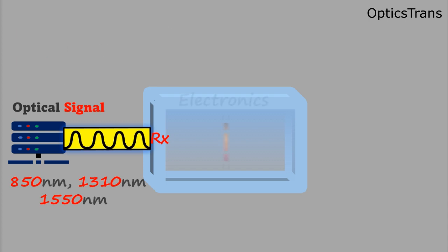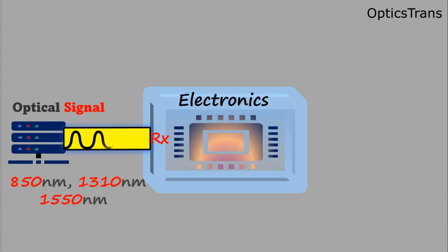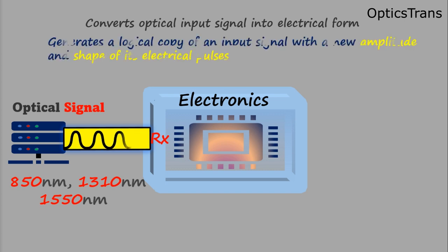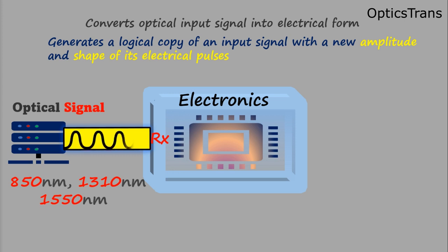After receiving the signal, inside the transponder, an electronic circuit converts the optical input signal into electrical form and generates a logical copy of the input signal with a new amplitude and shape of its electrical pulses.